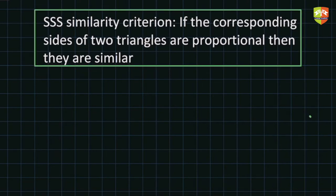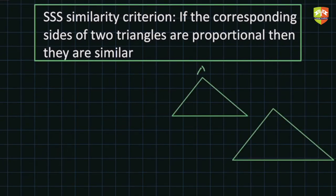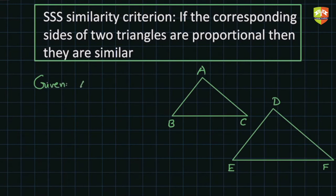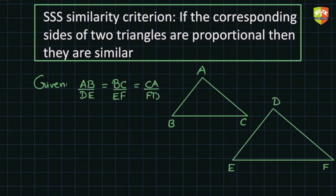So let's try and prove this theorem — this particular criterion. First of all we need to draw two triangles. So let's take triangle ABC and triangle DEF. Now let's write the given criteria. Given that AB upon DE is equal to BC upon EF, which is further equal to CA upon FD.